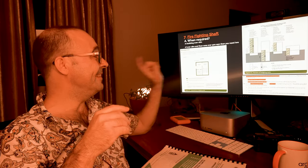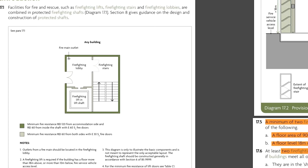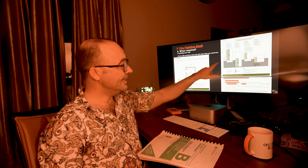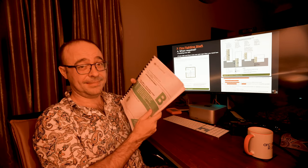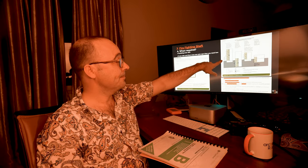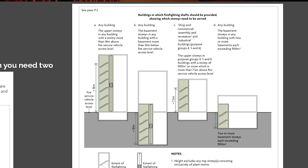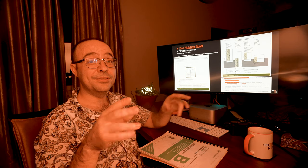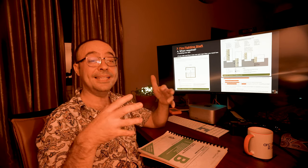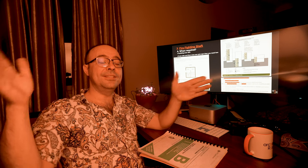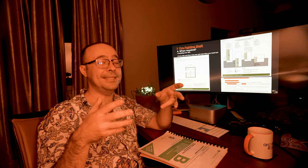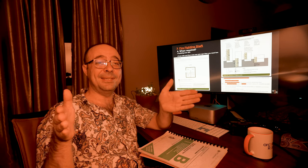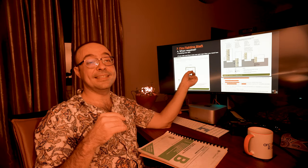Firefighting shaft — any building over 18 meters needs this. It's like a fire escape stair with a lobby and then a fireman's lift as well. Over 18 meters you need one of these. If you've got a basement more than 10 meters, you need one as well. And if the area of the floor is over 900 square meters, you'll need two of them. That's why a lot of the buildings I do are usually under 18 meters and usually under 900 square meters. I did a 20-storey building and kept it under 900 square meters per floor so I wouldn't need two of them.